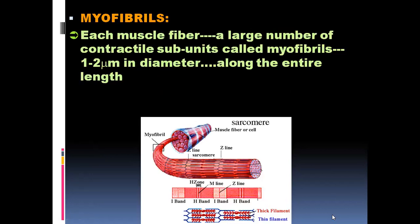Each muscle fiber contains a large number of contractile subunits called myofibrils, one to two micrometers in diameter, present along the entire length of the muscle cell. The sarcomere is the basic contractile unit of the myofibril. Now I am going to explain what is present inside the myofibril and what constitutes the sarcomere.